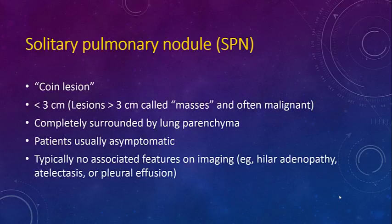Starting with the definition: a nodule is a coin lesion less than three centimeters — we all know any lesion more than three centimeters is considered a mass. It is completely surrounded by lung parenchyma and patients are usually asymptomatic, with no associated imaging features such as atelectasis, effusion, or hilar adenopathy.